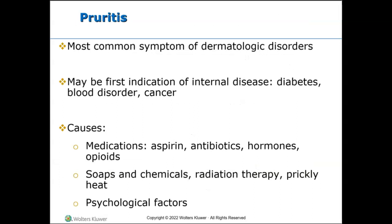Pruritus simply means itching. It can be associated with a number of disorders, including dry skin, skin disease, pregnancy, and rarely cancer. Anyone can get pruritus, but certain groups are more susceptible, including people who have seasonal allergies, hay fever, asthma, eczema, diabetes mellitus, HIV/AIDS, and various types of cancers — especially leukemia or lymphomas.